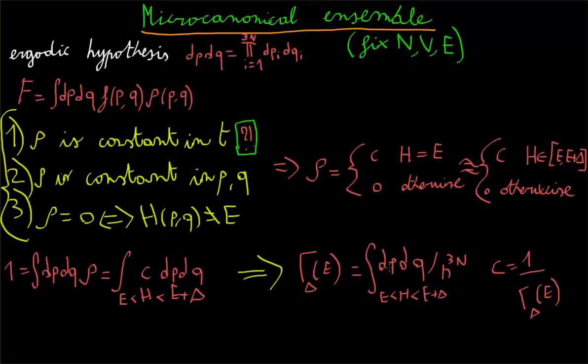Now, since dp dq has the dimensions of an action, that is, of the product of a position and the momentum, we need another quantity which has this same dimension for every product dp dq that we have. As you can see up here, we have 3n of these products, so we need an action to the power of 3n. And we might as well use a fundamental constant for it, which is just the Planck constant h.